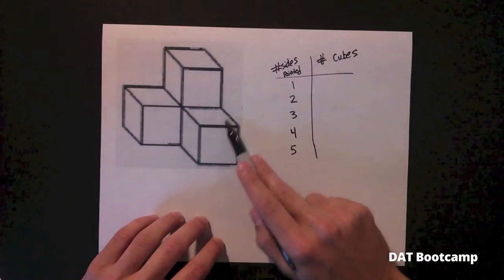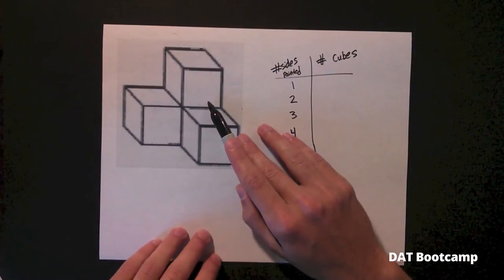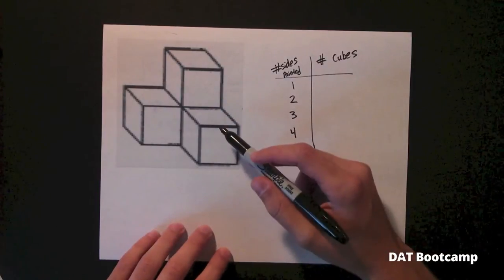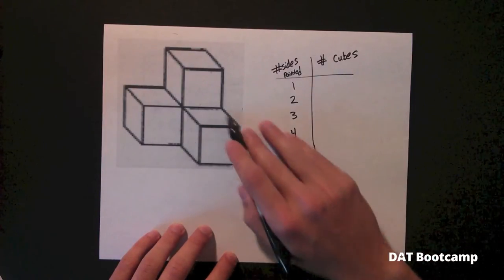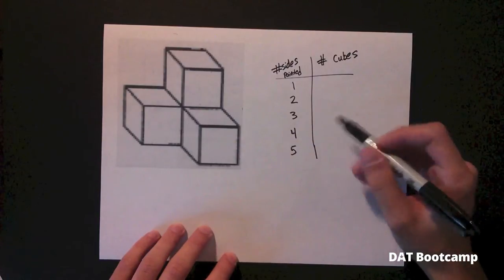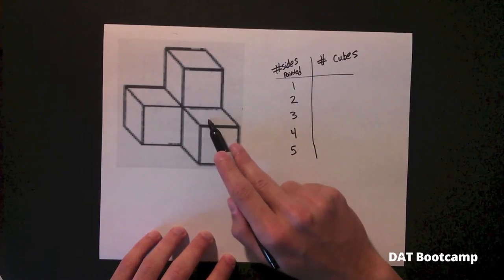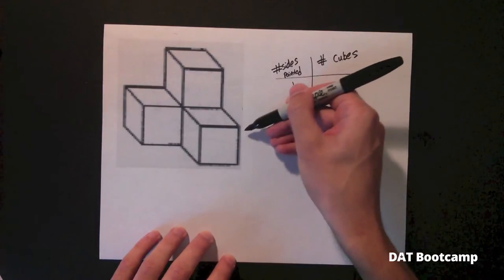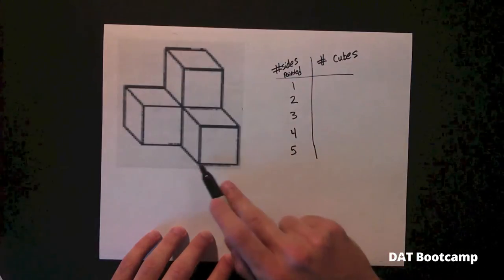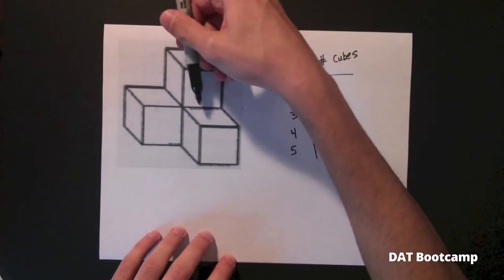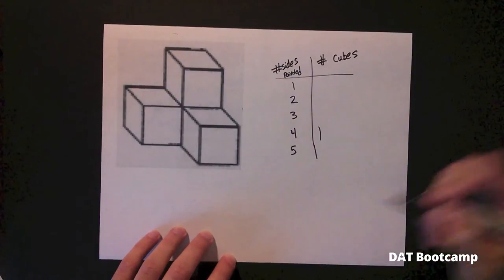There is always going to be a supporting cube to support cubes that are higher than the others. So on this problem, you go one by one on each cube starting at the lowest level and count how many sides that cube has painted, then make a tally. Starting with this one: this side is painted, this side is painted, the left side is painted, and the right side is painted even though we can't see it. The bottom is never painted and the back is not painted because it's resting against an invisible cube. So this cube has four sides painted.